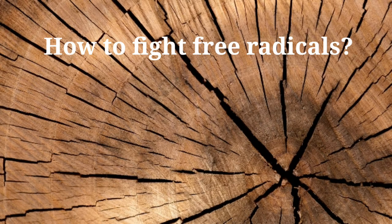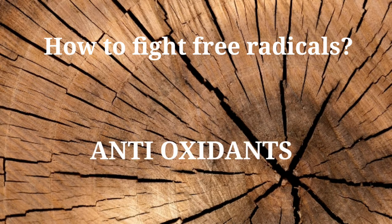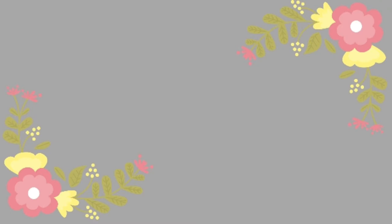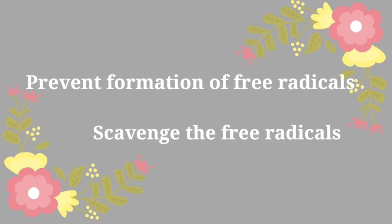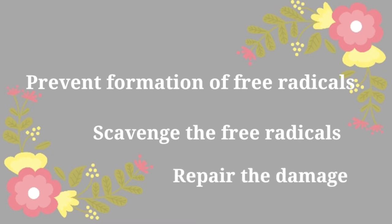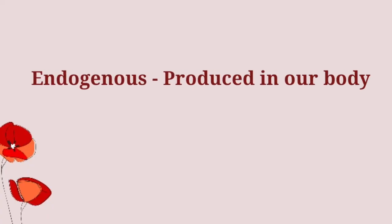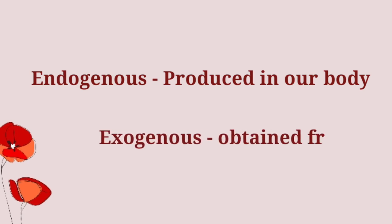The free radicals formed in our body are counteracted by molecules called antioxidants. Antioxidants act in three ways: by preventing free radical formation, by scavenging the already formed free radicals, and by repairing the damaged cell molecules. There are two types of antioxidants — endogenous, that is produced in our body, and exogenous, obtained from our diet.